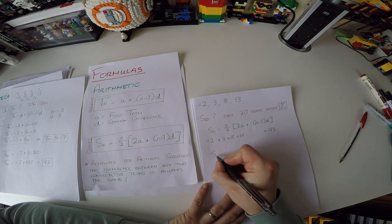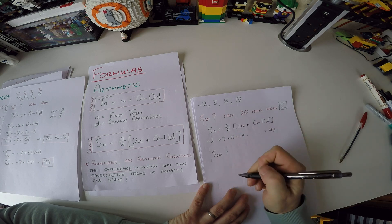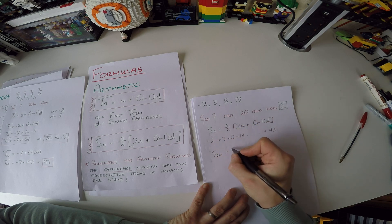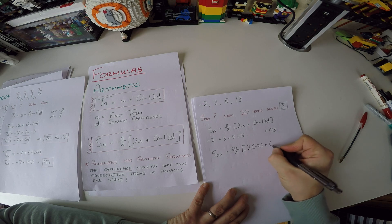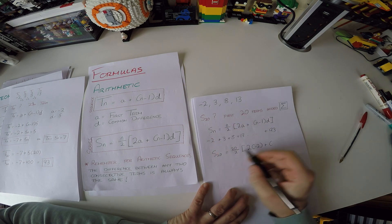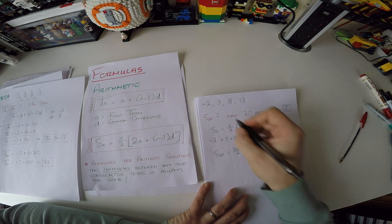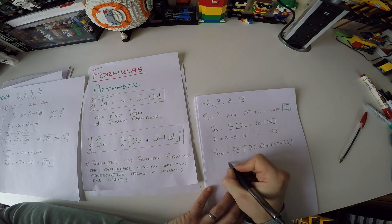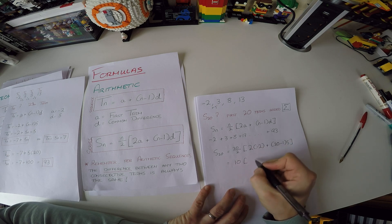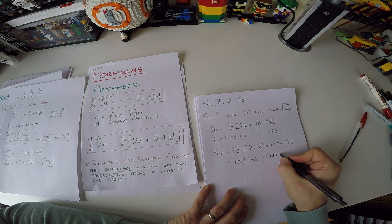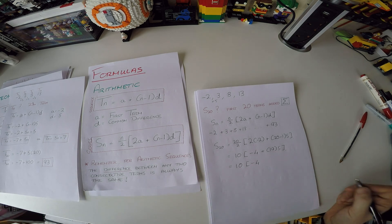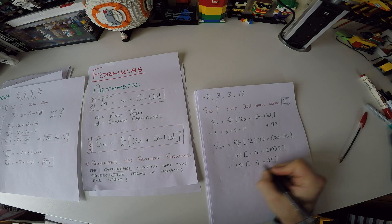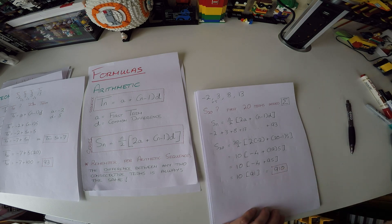For S20, replace n with 20: S20 equals 20 over 2 times (2 times minus 2 plus (20 minus 1) times 5). This simplifies to 10 times (minus 4 plus 19 times 5), which is 10 times (minus 4 plus 95), giving 10 times 91, which equals 910. So adding the first 20 terms of this arithmetic sequence gives 910.